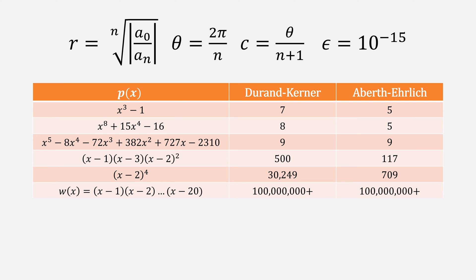For example, the famous Wilkinson polynomial, both of these take a very long time to solve them. If we lower the epsilon value, you can still kind of tell that Aberth is still slightly faster.